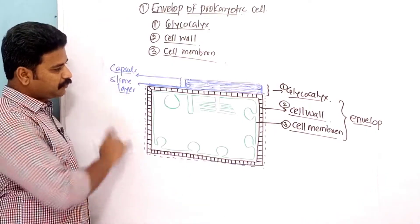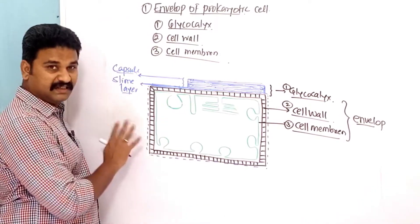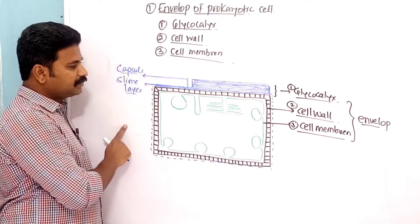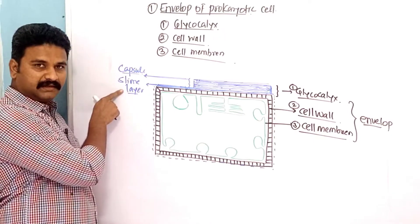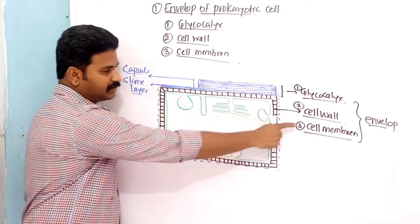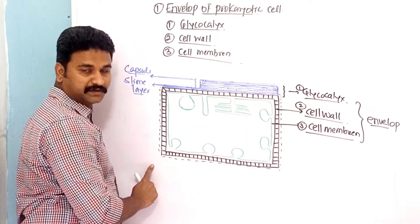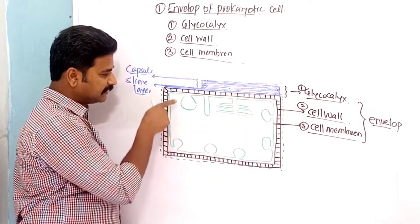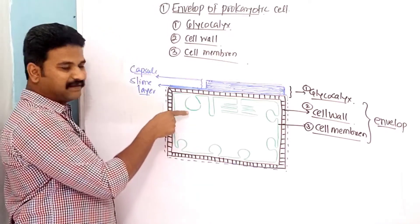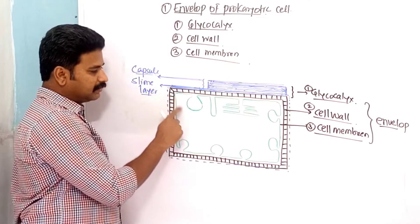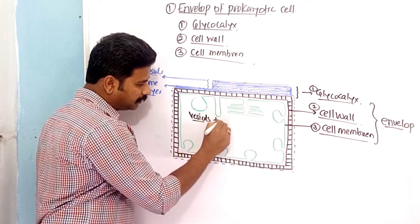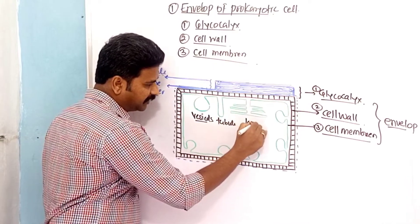The envelope of a prokaryotic cell consists of three tightly bound layers: the outermost layer is glycocalyx — if thickness is less, it is called slime layer; if more, it is called capsule. The middle layer is cell wall, made up of peptidoglycans. The innermost layer is cell membrane, which is a continuous structure that invaginates into the cytoplasm in the form of vesicles, tubules, or lamella.